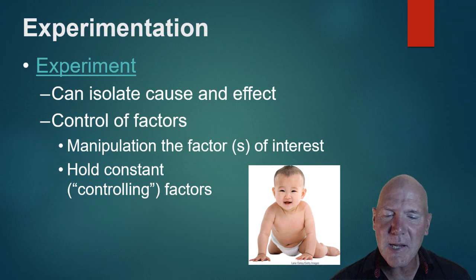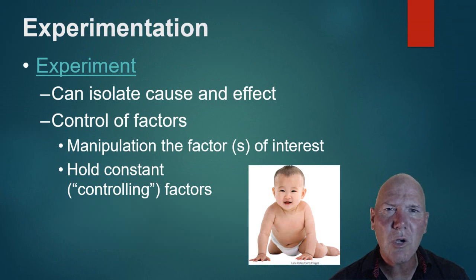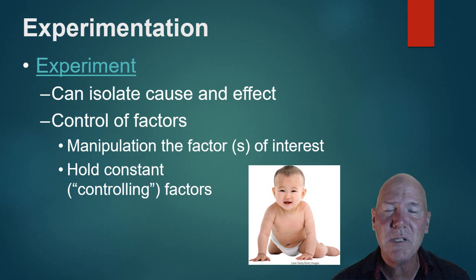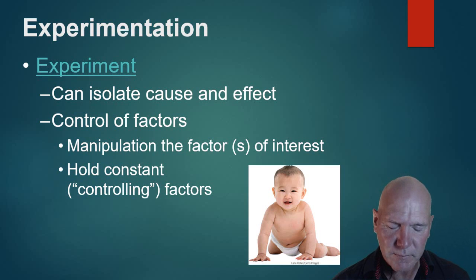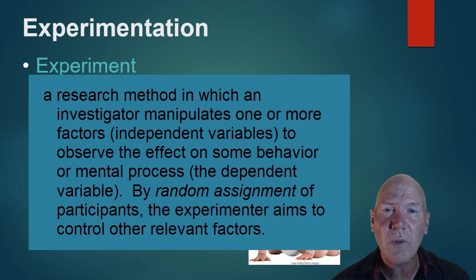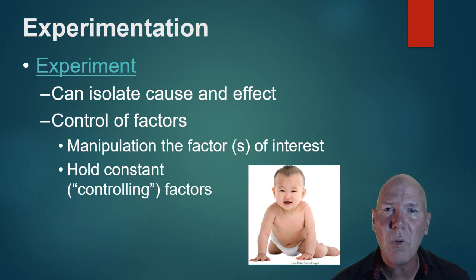So correlation shows a relationship between things, but the most important point is: correlation does not show causation — it only shows a relationship. The only research method that demonstrates causation is an experiment. An experiment's whole goal is to show cause and effect, because we have strict control over the factors. The basic idea is: if we have two groups of people and we keep everything the same except one thing, then any difference that occurs in one group can be attributed to that one thing — so we control all the factors.